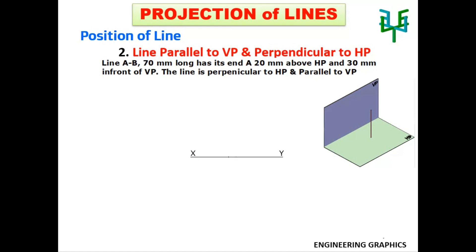Draw an XY line first. End A is 20mm above HP, so mark a point 20mm above the XY line — it is A-dash. Since the line is parallel to VP, the elevation has true length. The line is further perpendicular to HP, so the line in the elevation should be perpendicular to the XY line. The other end of the line is B-dash. The plan of the line is a point 30mm in front of the XY line — name it A, B.